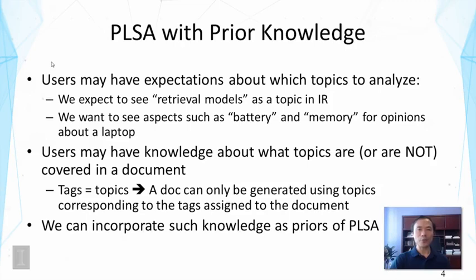A user may also have knowledge about the topic coverage. We may know which topics are or are not covered in a document. For example, we might have seen topical tags assigned to documents, and those tags could be treated as topics. If we do that, then a document can only be generated using topics corresponding to the tags already assigned to the document. If a document is not assigned a tag, there's no way for using that topic to generate the document.